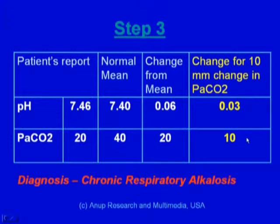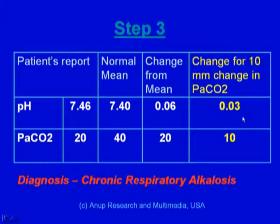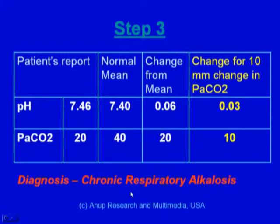Let's do the math. For a 20 millimeter decrease in PaCO2, the pH has increased by 0.06. So for a 10 millimeter decrease in PaCO2, it has increased by 0.03, and that fits the diagnosis of chronic respiratory alkalosis. We write the term 'chronic' before 'respiratory,' and it becomes chronic respiratory alkalosis — first alkalosis, then respiratory, then chronic.